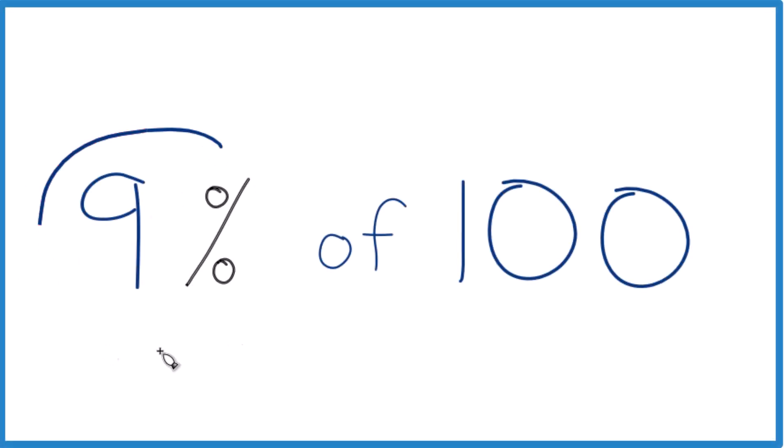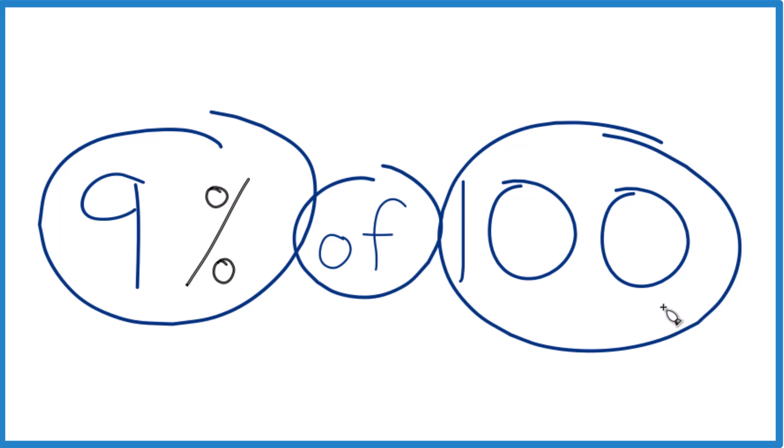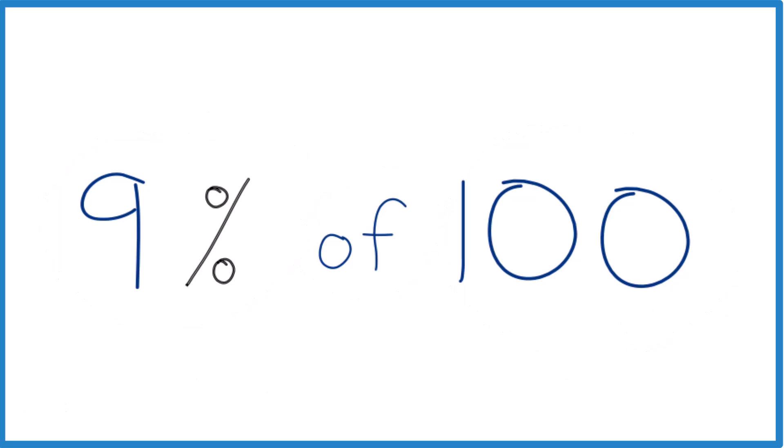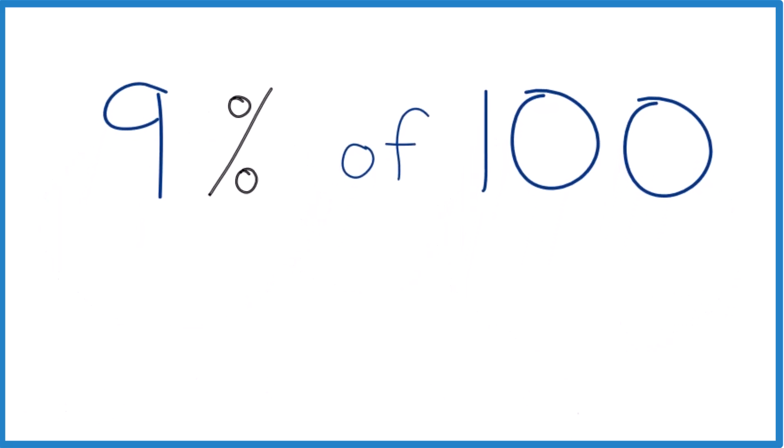So let's take 9% of 100. Here's how you could think about that. So first off, that 9%, when we have that percent, that means per 100. So we have 9 parts per 100. So 9% of 100 is just 9.